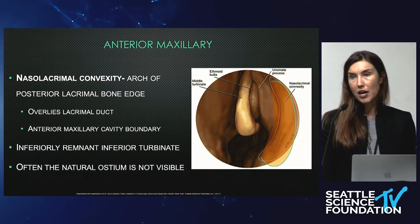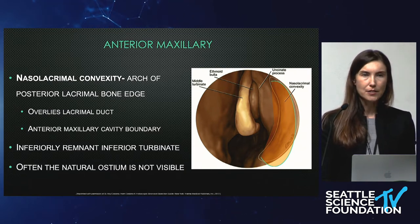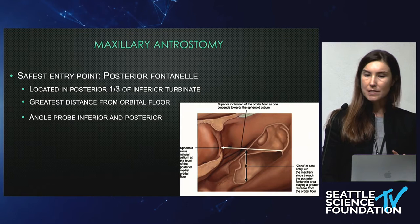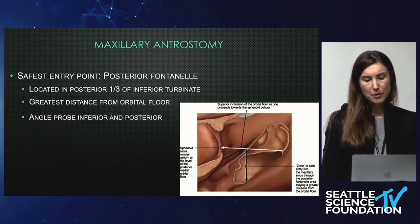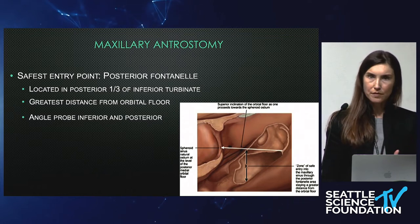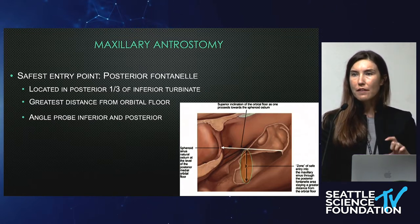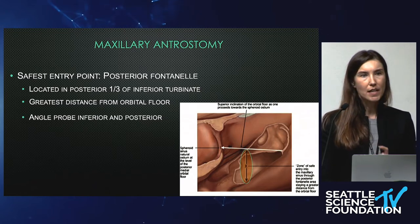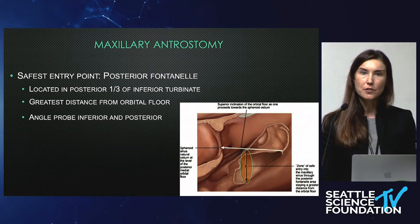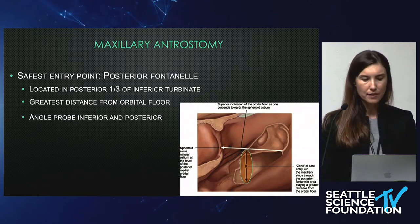Inferiorly, you're also going to be looking for any remnant of the inferior turbinate. Often in these patients the natural ostium isn't visible, but you should look to see if it's present. If it's scarred off, we'll talk about how you can enter that maxillary safely anyway. The safest entry point is actually the posterior fontanelle — at the posterior one-third of the inferior turbinate, that's the area with the greatest distance from the orbital floor. So you have the most room to enter with the least risk of hitting the orbit.